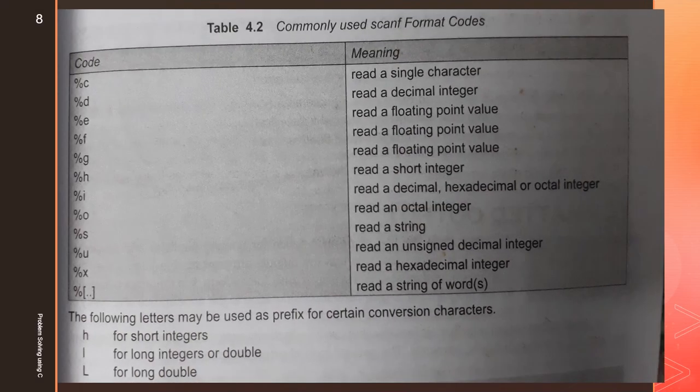On the slide, various control string formats are shown. To read a character, use the control string %c. For an integer, use %d. For floating point values, use %e, %f, or %g. For a short integer, use %h. To read a decimal, hexadecimal, or octal integer constant, use %i.